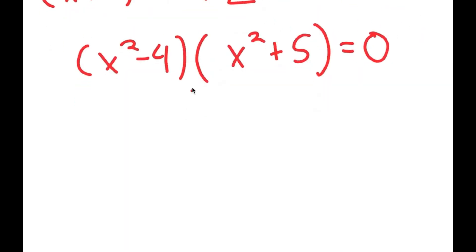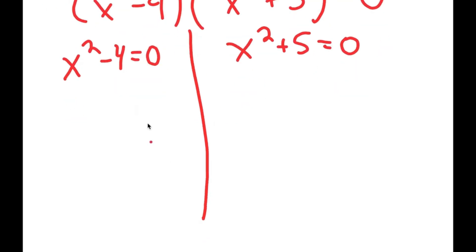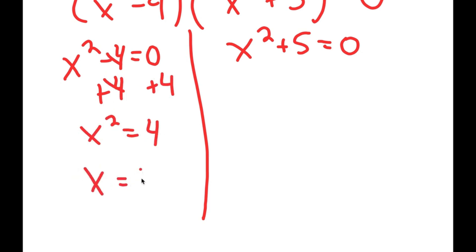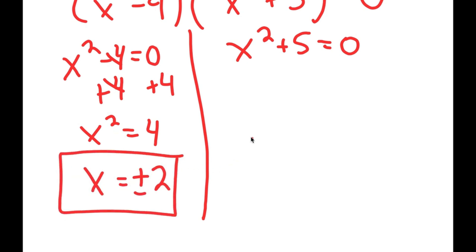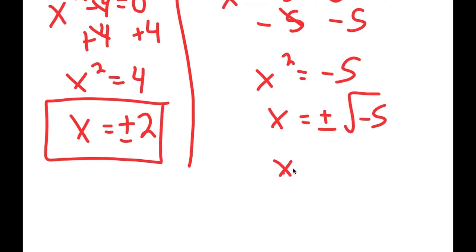This gives me two equations: x squared minus 4 equals 0, and x squared plus 5 equals 0. For x squared minus 4 equals 0, I add 4 on both sides to get x squared equals 4, so x equals positive or negative 2. For x squared plus 5 equals 0, I get x squared equals negative 5, and x equals positive or negative square root of negative 5, which is equal to positive or negative square root of 5 times i.